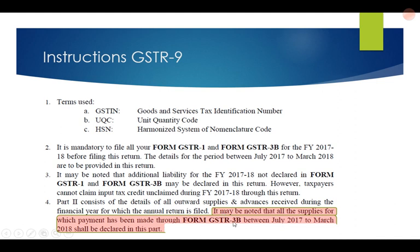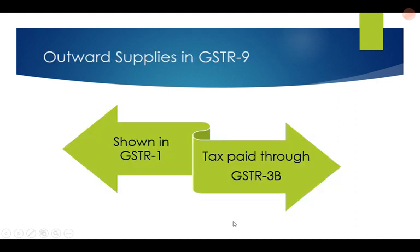What does instruction number 4 mean? It means that outward supplies shown in GSTR9 should be those which have been shown in GSTR1 and for which the tax has been paid through GSTR3B.